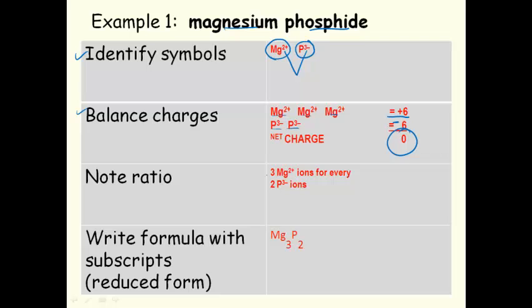Take note of the ratio. 3 magnesium ions for every 2 phosphide ions. Write the formula based on this ratio. 3 magnesium for every 2 phosphide. The formula is Mg3P2.